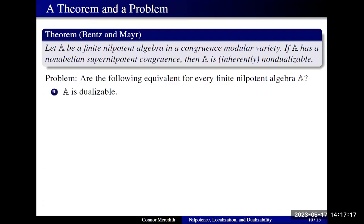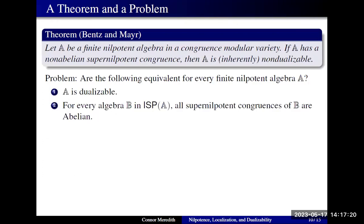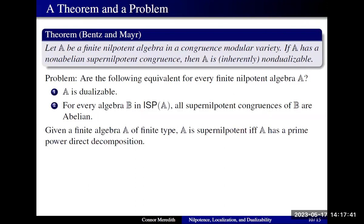A natural question is to ask if that is the only barrier for finite nilpotent algebras — are dualizability and the absence of non-abelian super nilpotent congruences equivalent? Another way to look at the Benson-Meyer theorem is to recognize that for a finite algebra of finite type, super nilpotence is equivalent to the existence of a prime power direct decomposition.